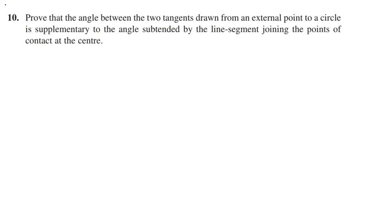Exercise 10.2, problem number 10: Prove that the angle between the two tangents drawn from an external point to a circle is supplementary to the angle subtended by the line segment joining the points of contact at the center.